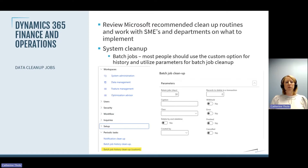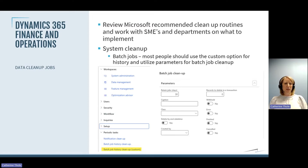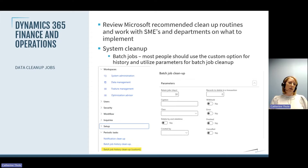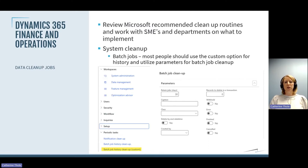I'm going to focus on the system areas, but there are recommendations for other areas of the software as well — I suggest you work with your subject matter experts and departments on those. As far as system cleanup, I recommend you run your batch job history cleanup. I usually suggest the custom option because it gives a little more flexibility. When you come into this form, you can specify how long you want to keep your batch job history — 30 days, two weeks — and make adjustments to parameters for jobs that need to be kept longer.